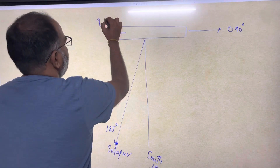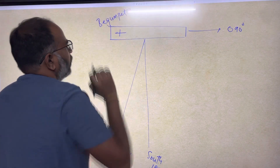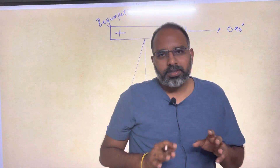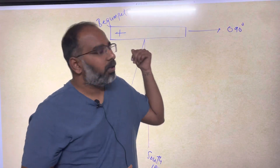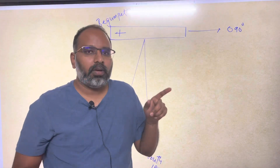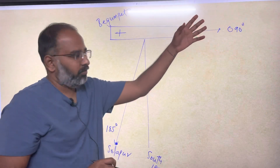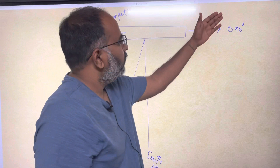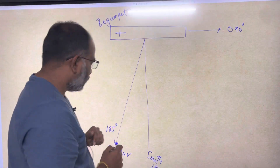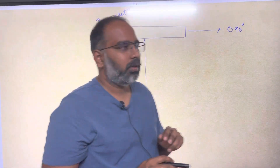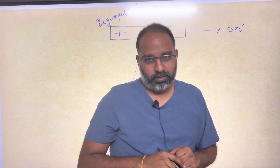Let's say Solapur is on radial 185 degrees from Begum Bed airport. Your departure clearance will be: Victor Tango Alpha Bravo Charlie, after takeoff climb straight ahead — let's say 1000 feet AGL — and then turn right to intercept your track 185 outbound at an angle of 30 degrees.